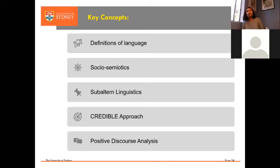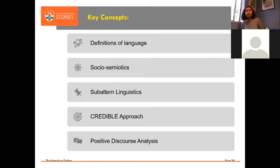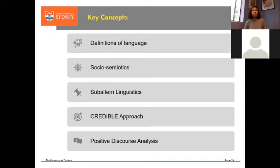Next is subaltern linguistics. There are different types of linguistics: psycholinguistics, functional linguistics, forensic linguistics. One of these approaches is subaltern linguistics — basically a linguistics that uses the study or knowledge about language to create materials or projects that will empower communities. It's basically oriented towards local communities, especially marginalized people or indigenous communities, those communities that have lesser privilege than others.